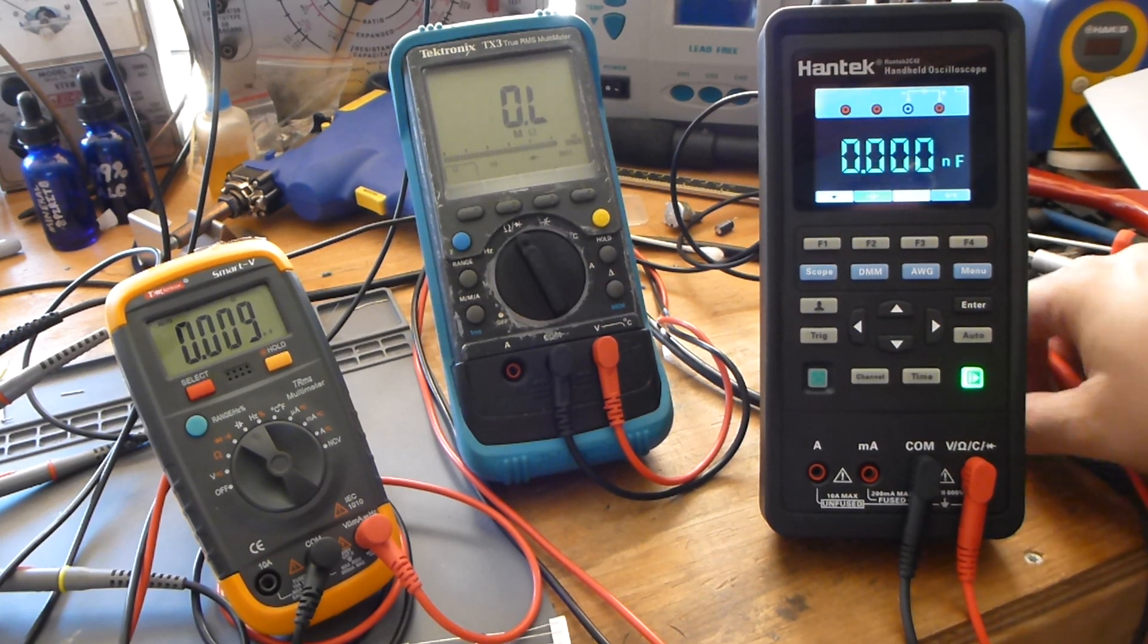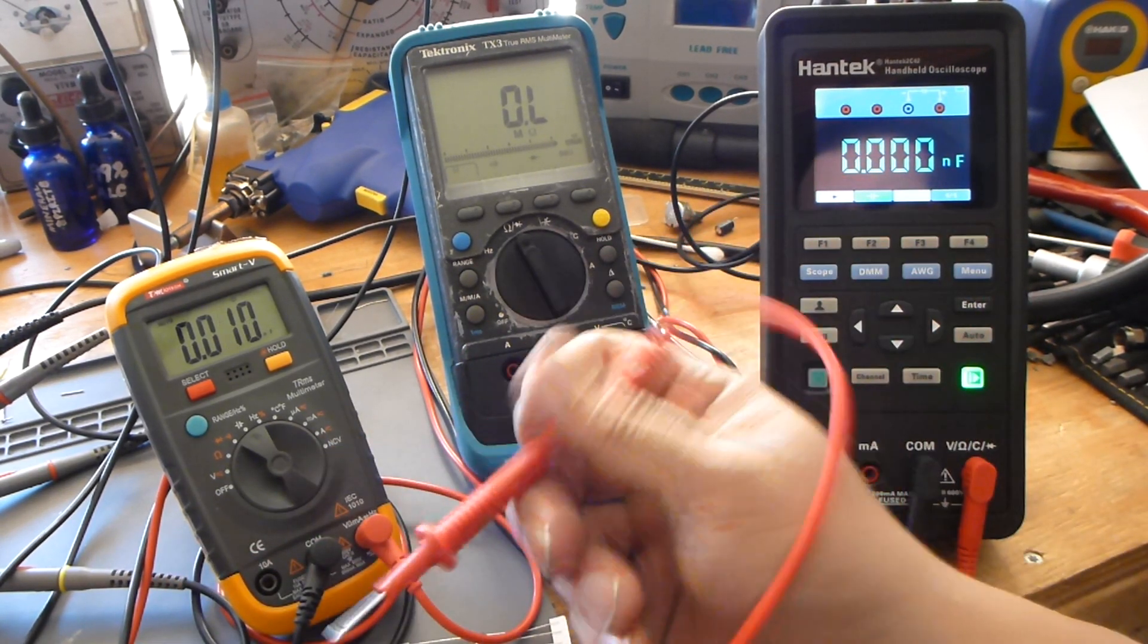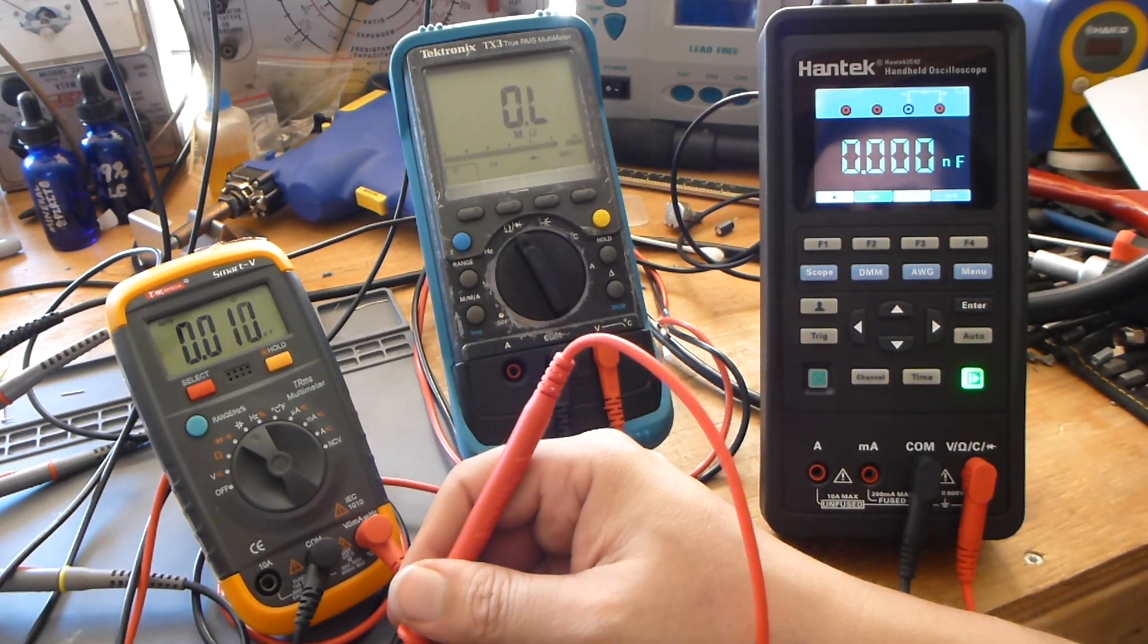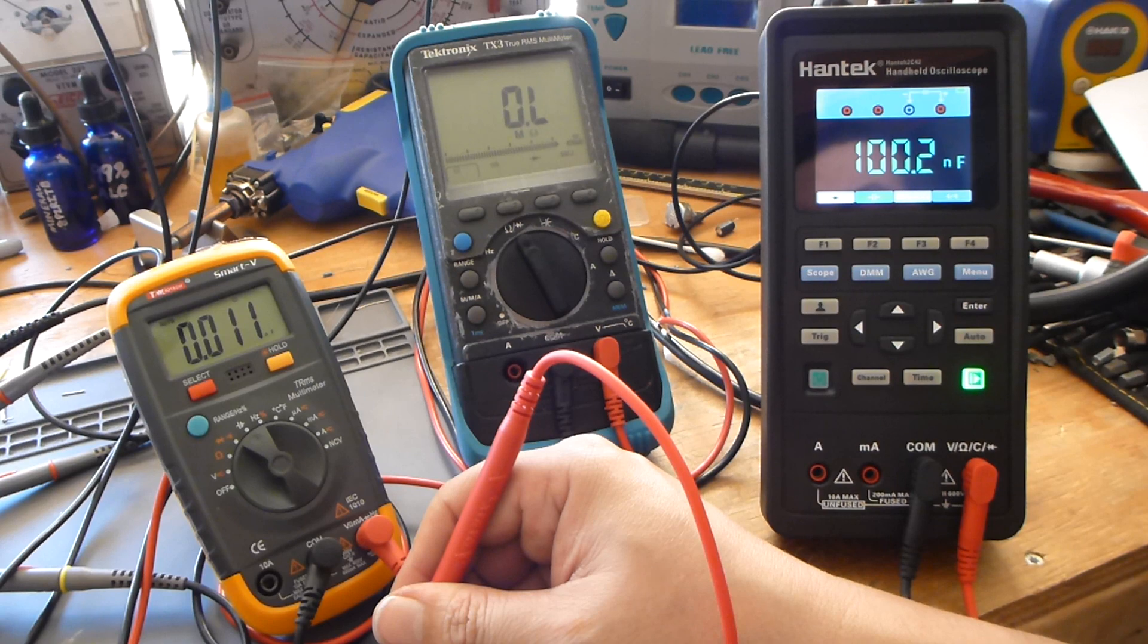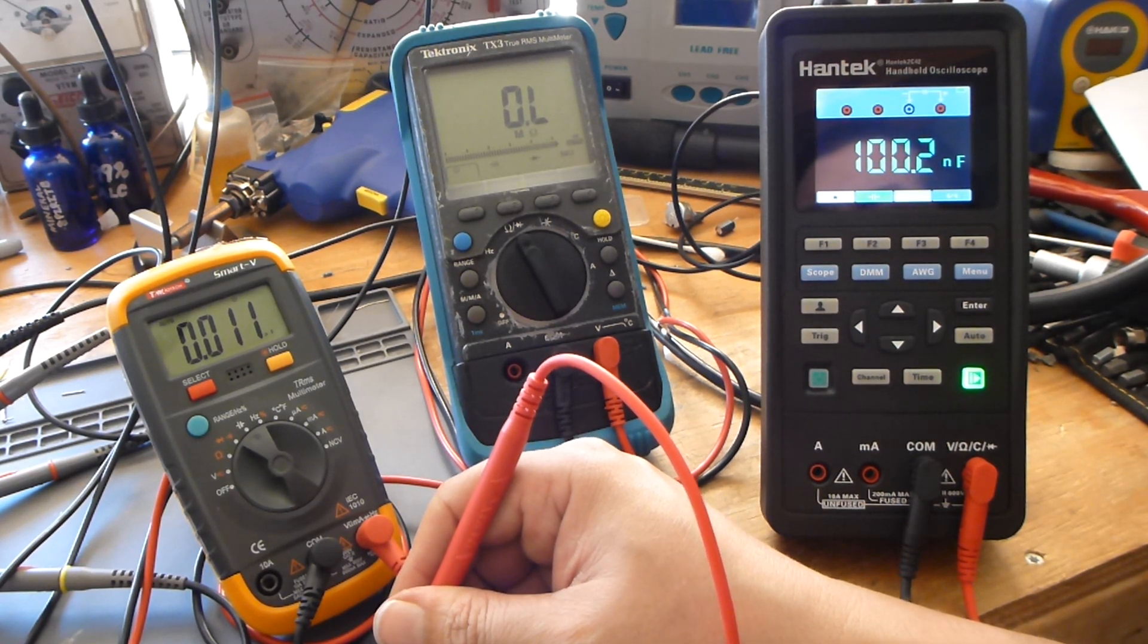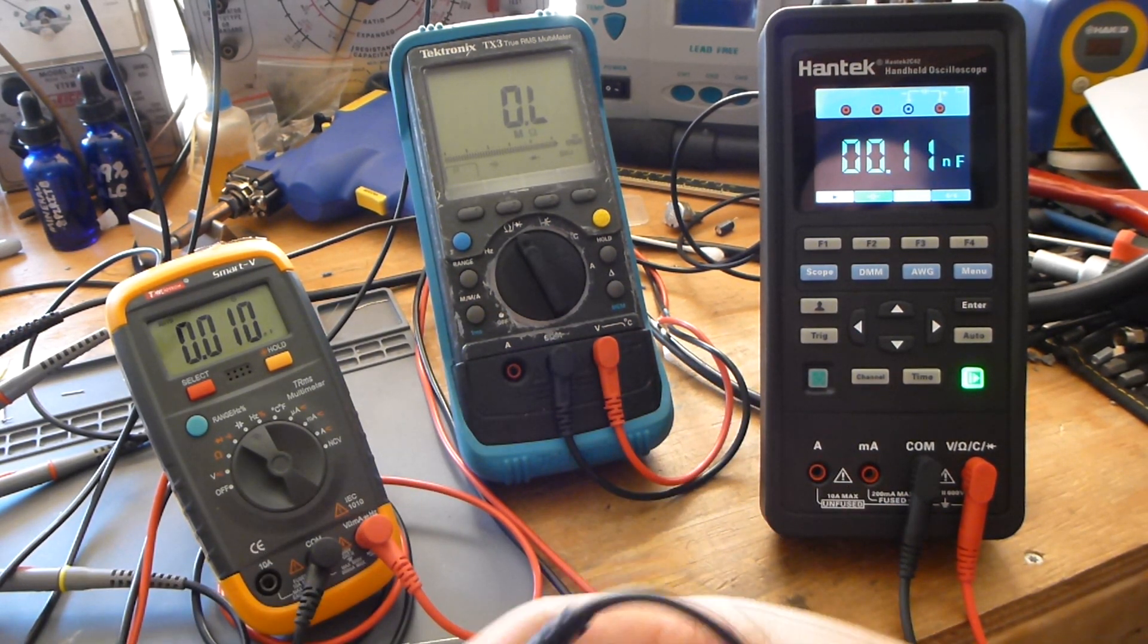And let's see what our Hantek says. 100.2 nanofarads. I'd say that's pretty darn close. I like to do things in close.